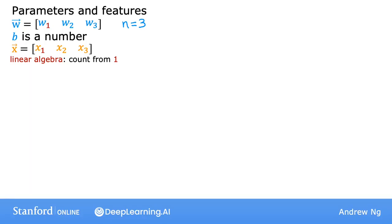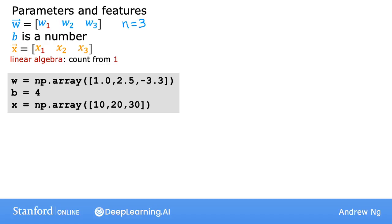The first value is subscripted w₁ and x₁. In Python code, you can define these variables w, b, and x using arrays like this. Here I'm actually using a numerical linear algebra library in Python called NumPy, which is by far the most widely used numerical linear algebra library in Python and in machine learning.